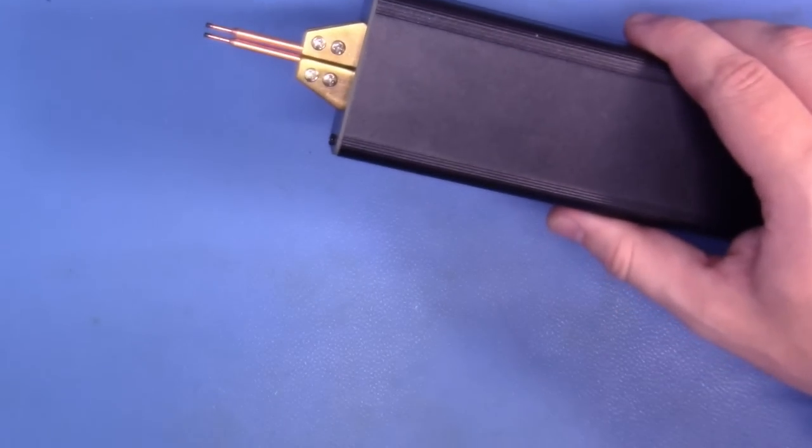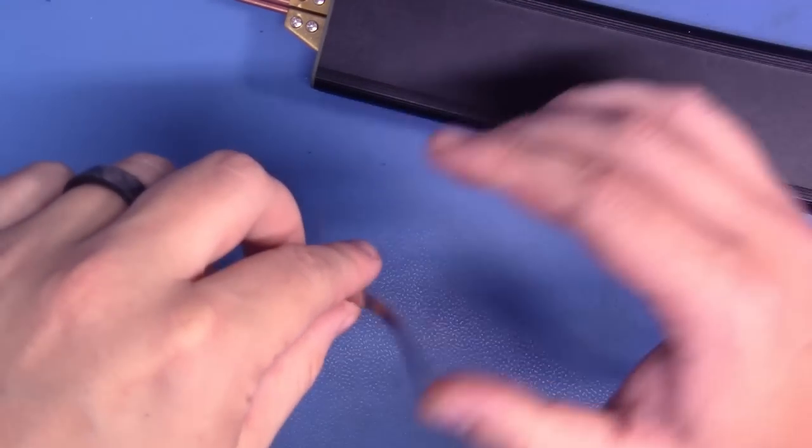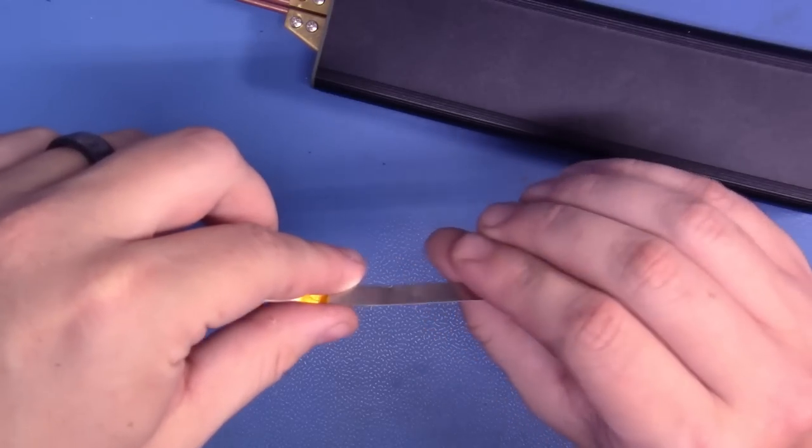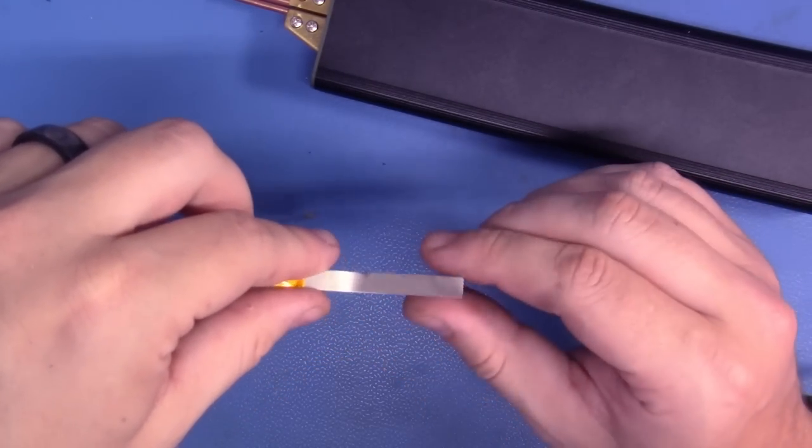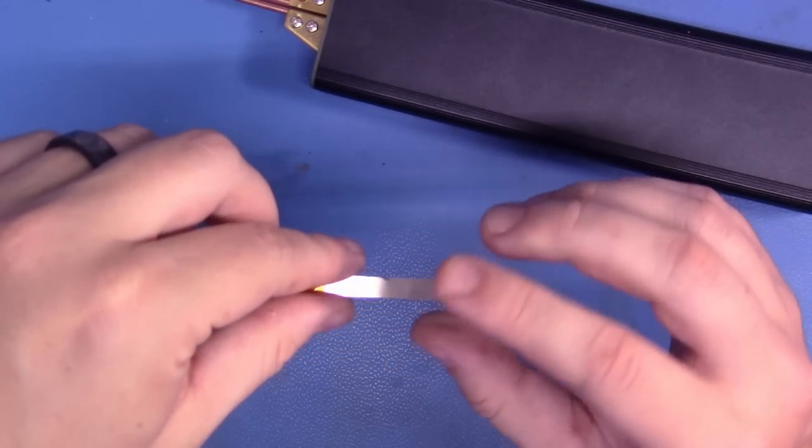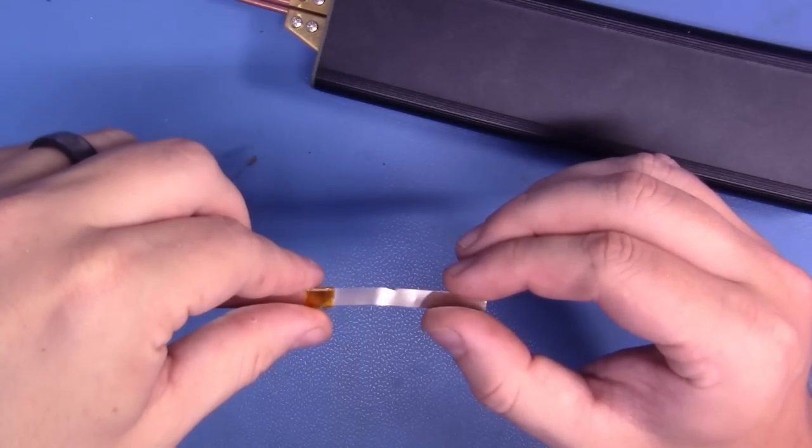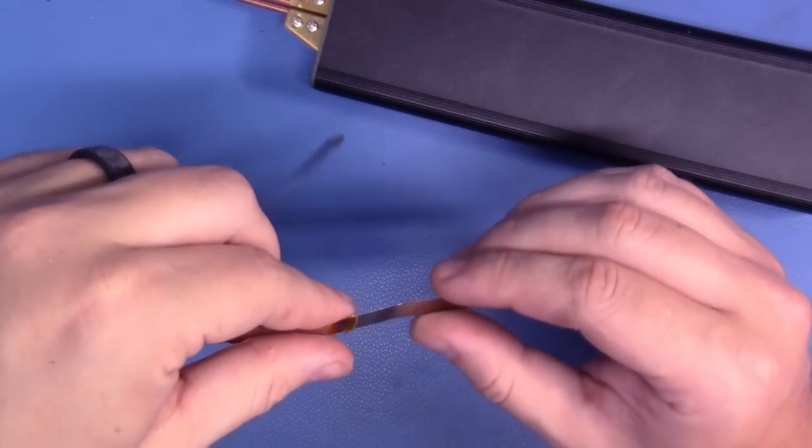Now we're going to be also taking some nickel stripping banding, and we're just going to be cutting this to size, running this across the terminals, and we're going to be making some nice arcs, and we're going to be spot welding this material onto the battery terminals. So let's get that ready. Let me show you how that's done.